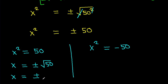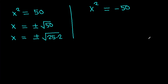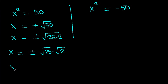And x is plus minus root of 25 times 2, and x will be plus minus root 25 times root 2. So, x will be plus minus 5 root 2.